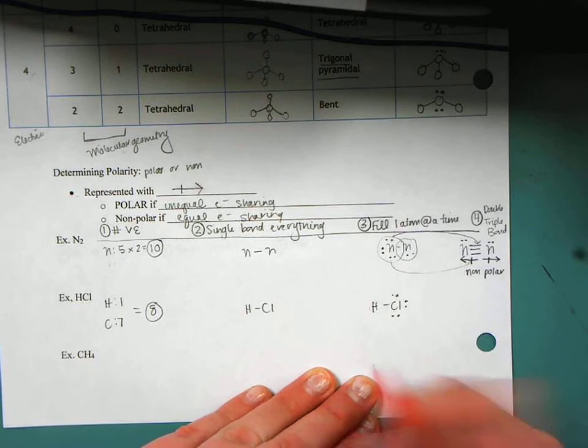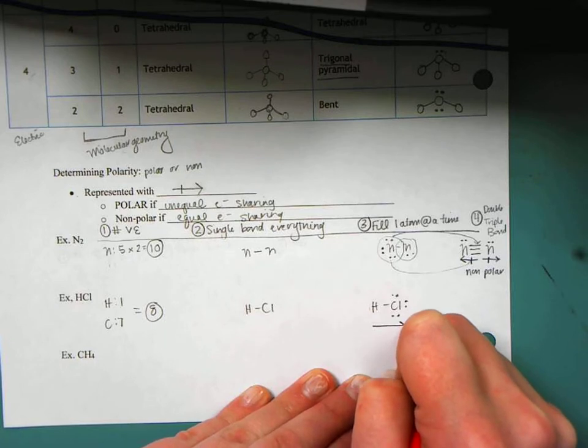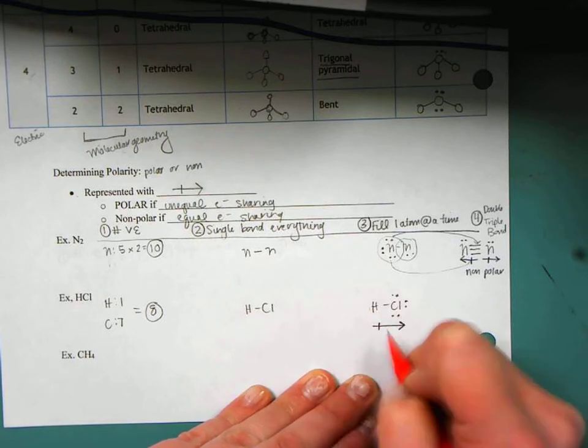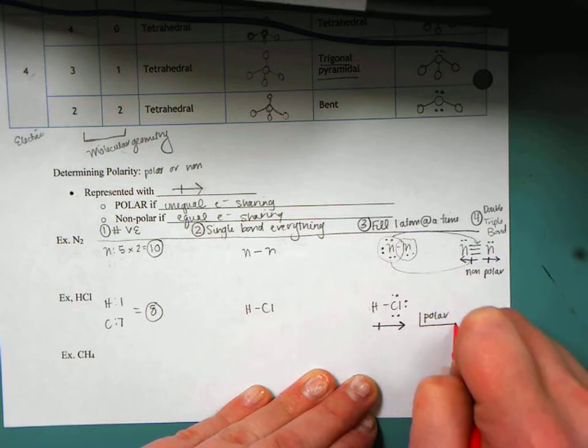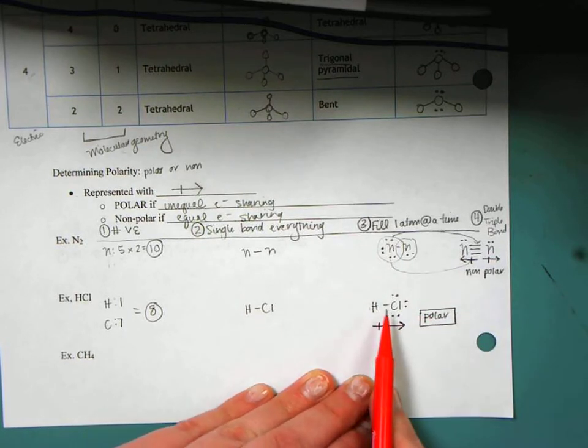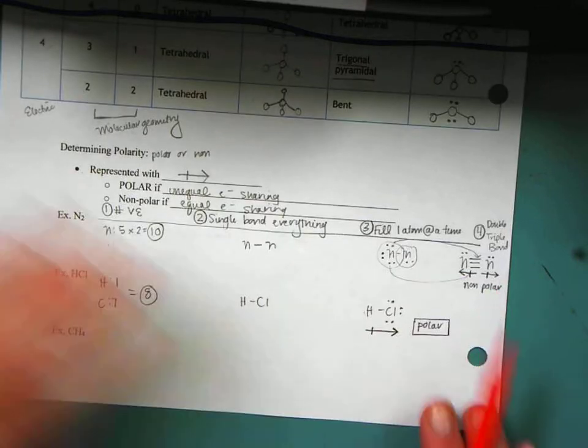Now something that I'm going to notice is that my chlorine is much more electronegative than my hydrogen. So it is pulling electrons towards it, and this is a polar molecule. So the chlorine, because it's more electronegative, is able to pull those electrons closer to it. So this is going to be a polar molecule.